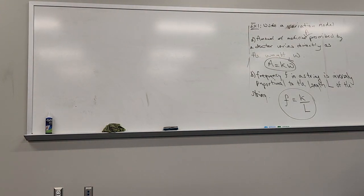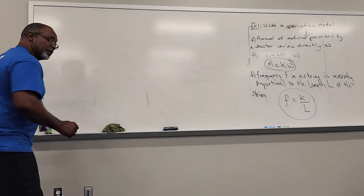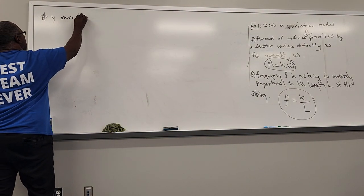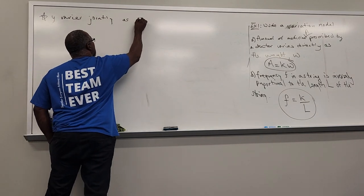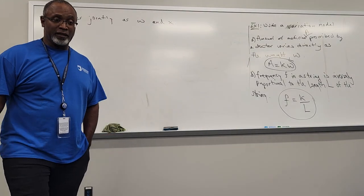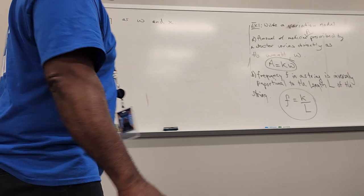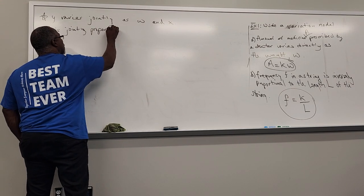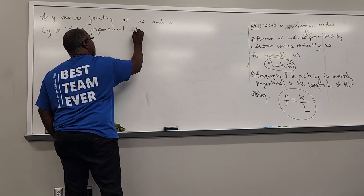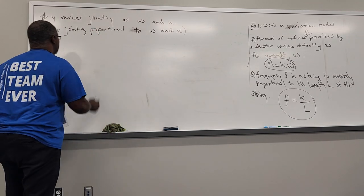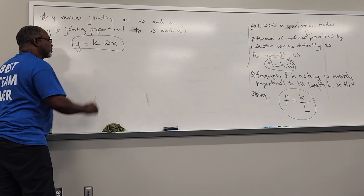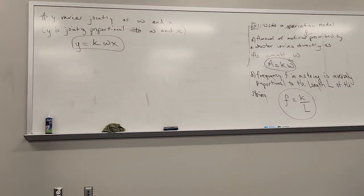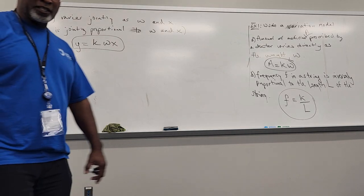There's also something called joint variation. If I see 'y varies jointly as w and x' — or alternatively 'y is jointly proportional to w and x' — then the relationship is y equals k times w times x. It generalizes from direct proportionality. So we can have direct, inverse, or joint proportionality.